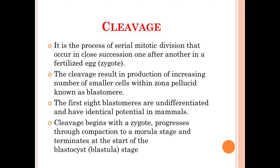The blastomeres that are formed up to the first eight in number are undifferentiated and have identical potential in mammals. In general, these blastomeres have the capacity to give rise to an adult organism. This property is known as totipotency, and is usually found in the case of mammals.